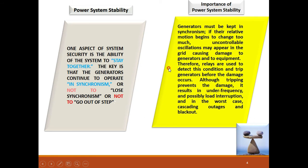The importance of power system stability is that generators must be kept in synchronism to make the system stable. If relative motion begins to change too much, uncontrollable oscillations may appear in the grid, causing damage to the generators. Oscillations come into picture when there is an imbalance — the load angle goes on changing and does not attain stable condition immediately. If the oscillations are too large, there is a possibility of losing synchronism. Relays are used to detect these conditions and trip generators before damage occurs.